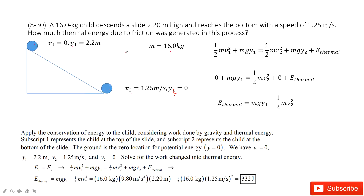In this problem, we consider energy is conserved: initial energy equals final energy. So initial kinetic energy plus potential energy equals final kinetic energy, plus potential energy, plus thermal energy. Because there is friction between the child and the surface, we must consider this thermal energy.